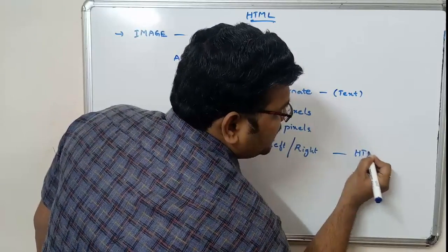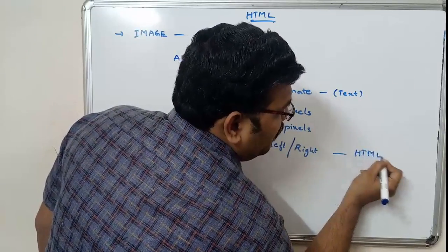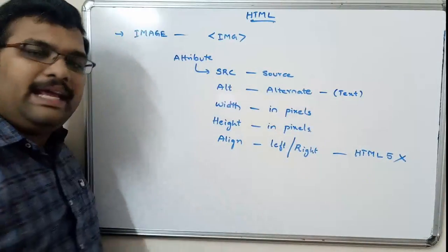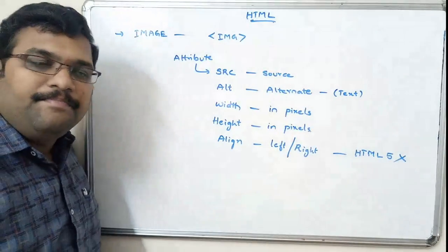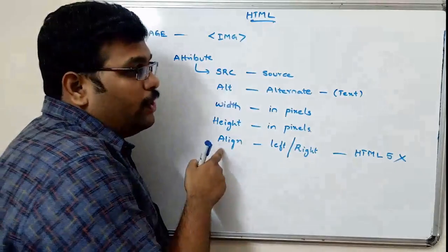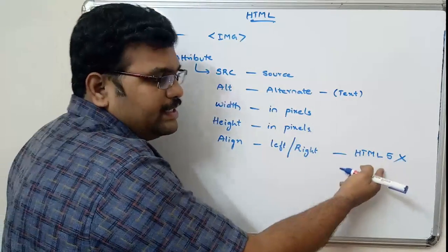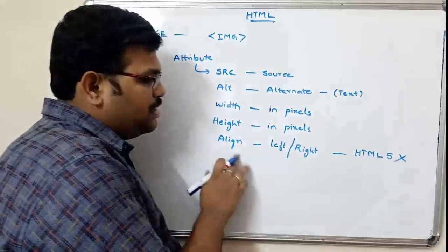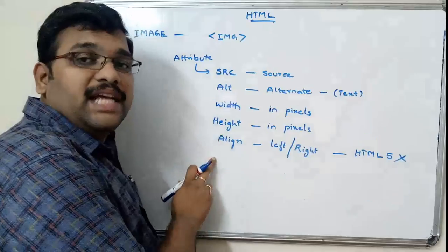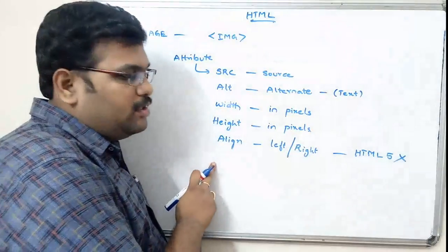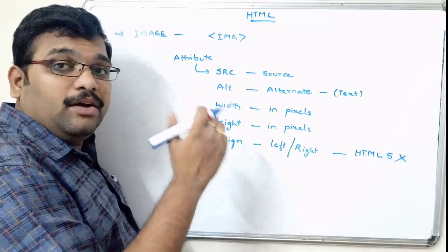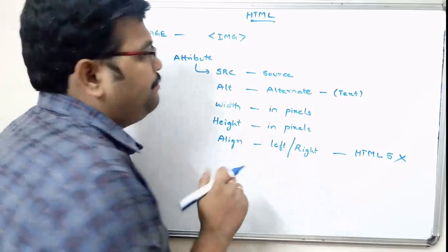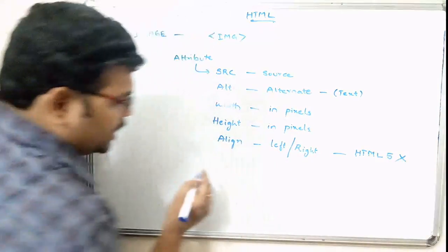The align attribute will not work in HTML5. Only in the lower versions of HTML can we use the align attribute to specify whether we want to display the image on the left side or the right side.